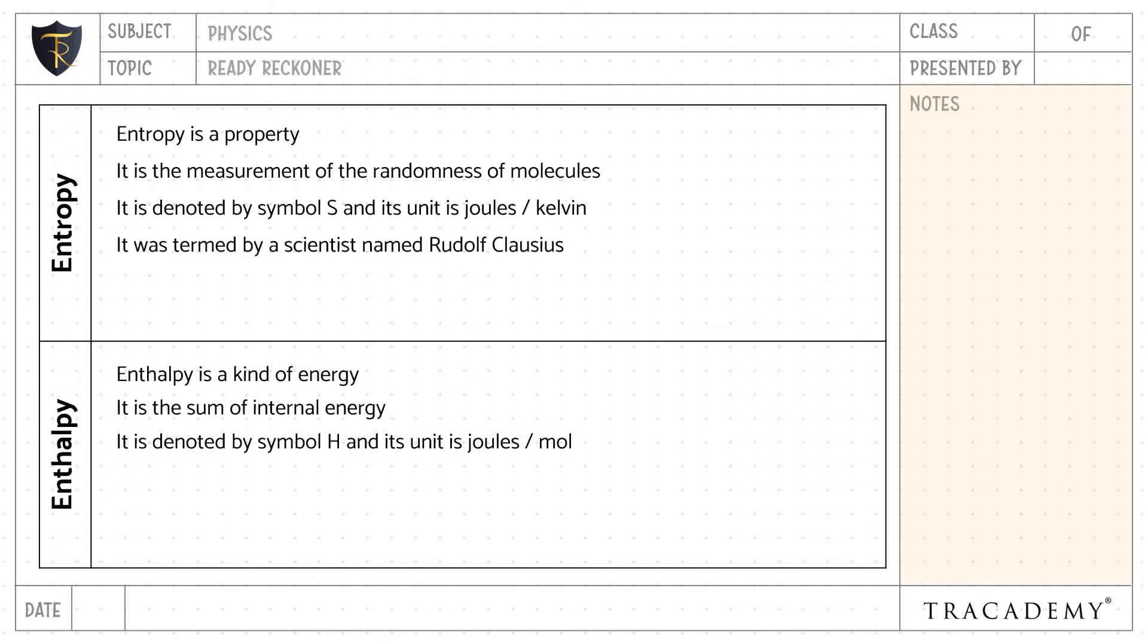Entropy was termed by a scientist named Rudolf Clausius whereas enthalpy was termed by a scientist named Heike Kamerlingh Onnes.